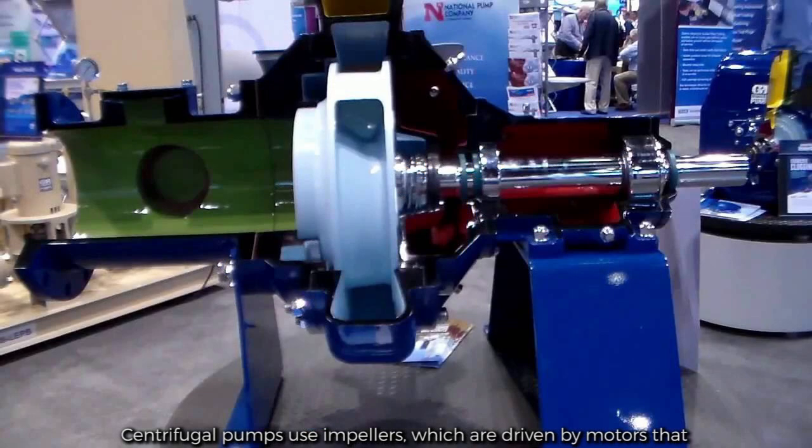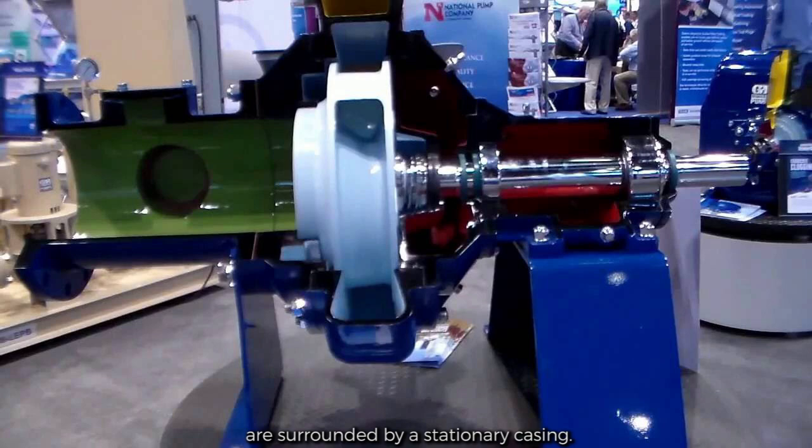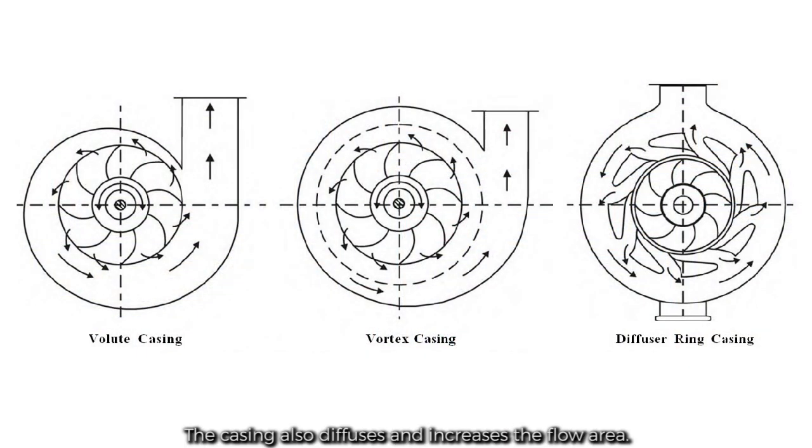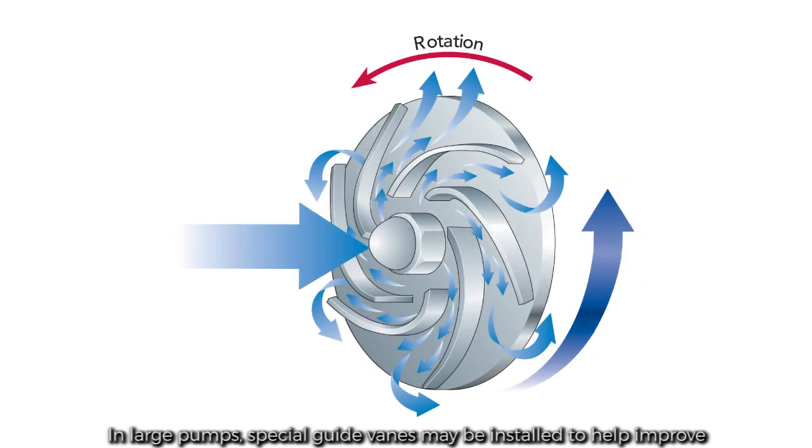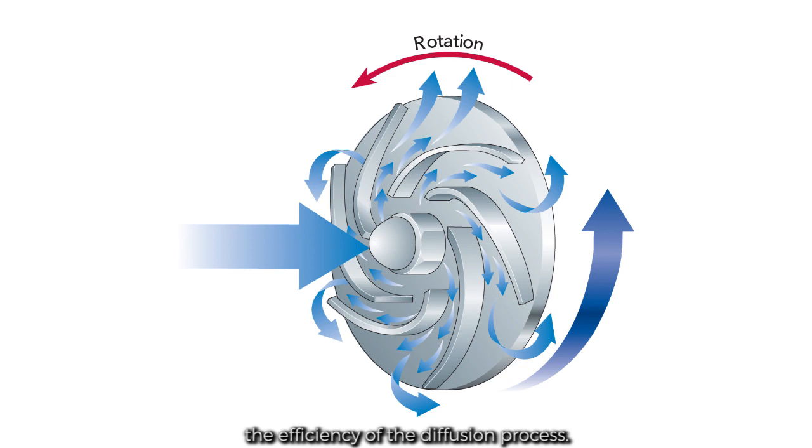Centrifugal pumps use impellers which are driven by motors that are surrounded by a stationary casing. The casing also diffuses and increases the flow area. In large pumps, special guide vanes may be installed to help improve the efficiency of the diffusion process.